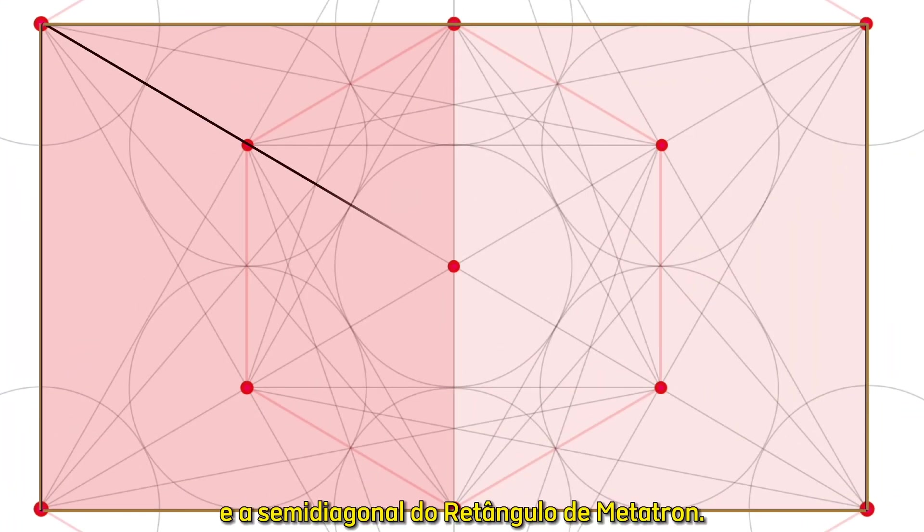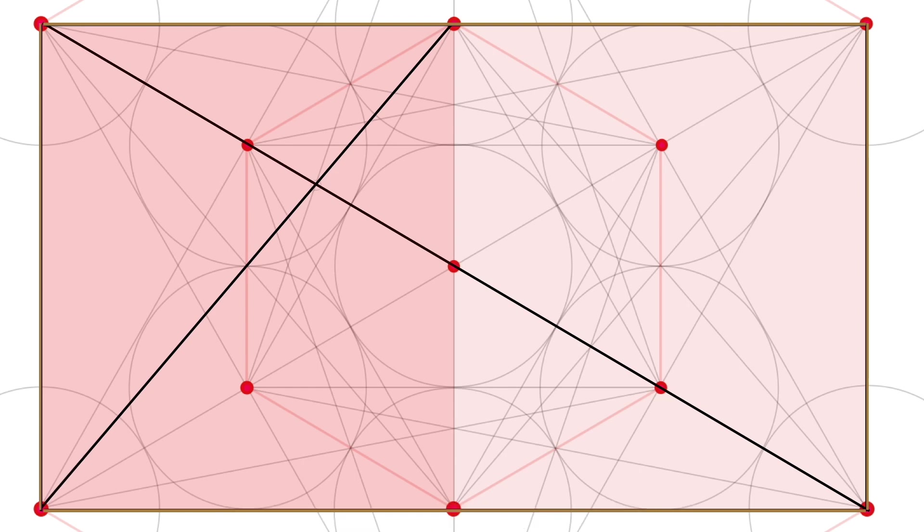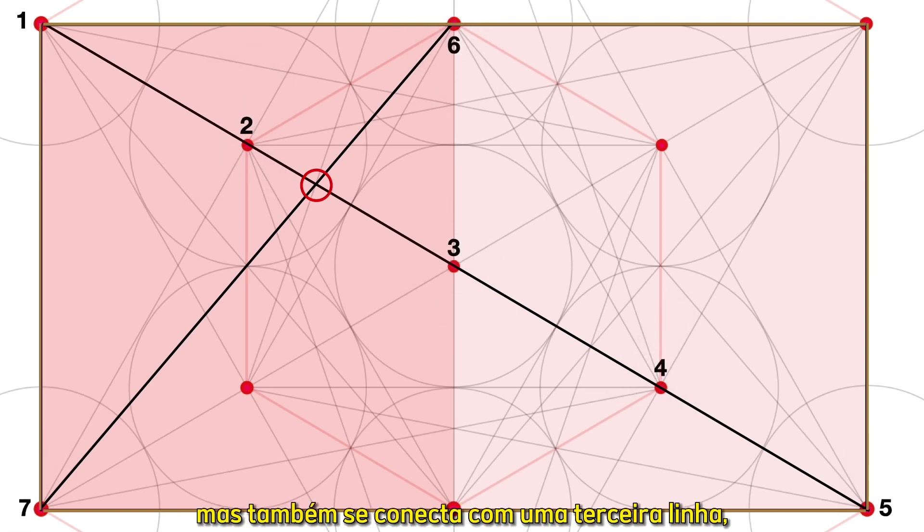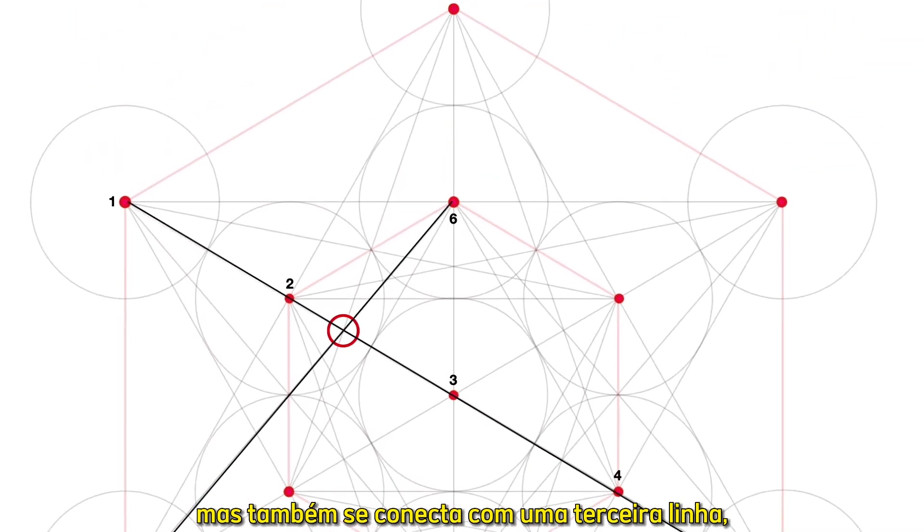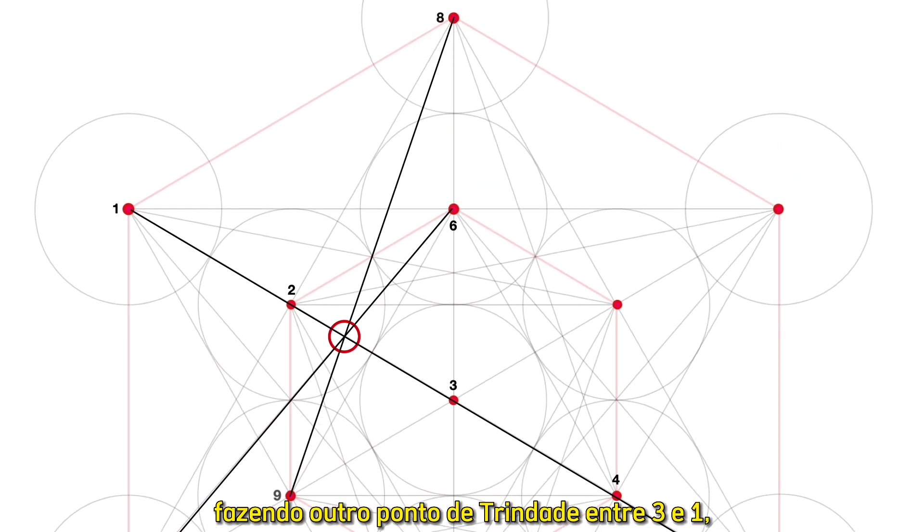We immediately see they cross at a point that not only connects seven circle centers, but also links with a third line, making another three-in-one trinity point. All together, connecting nine of Metatron's thirteen centers.